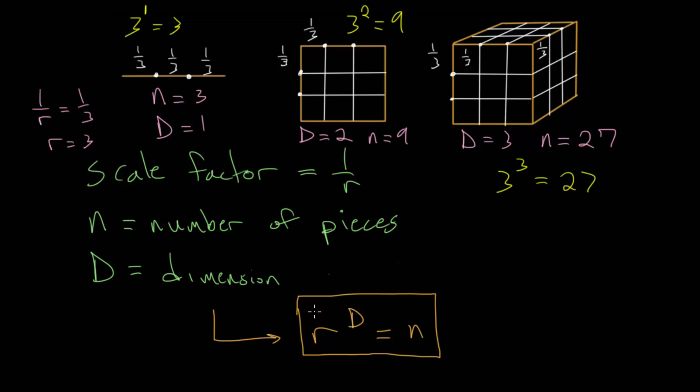So in the next video, we'll look at the dimension of the Koch snowflake, since we are already a little bit familiar with that. And then in later videos, we'll look at the dimension of the Menger sponge and the Sierpinski triangle, as well as several other fractals.